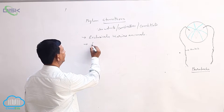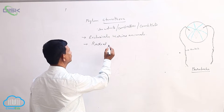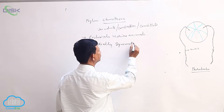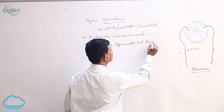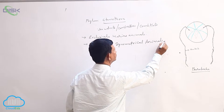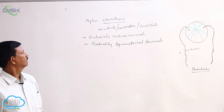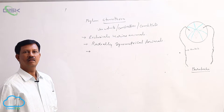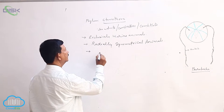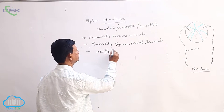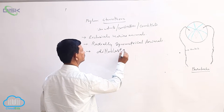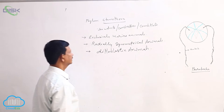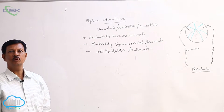These are radially symmetrical animals. These animals show the diploblastic nature, with the presence of two layers: ectoderm and endoderm. That's why they are known as the diploblastic animals.